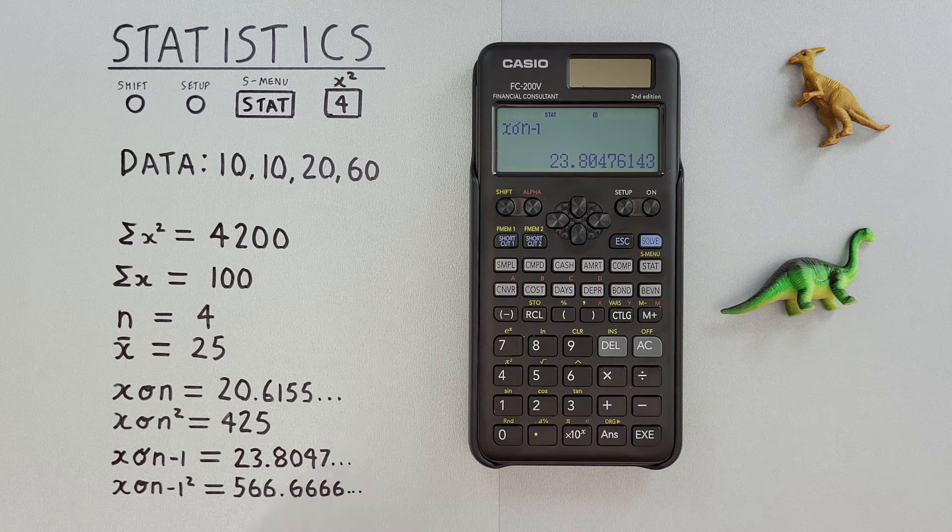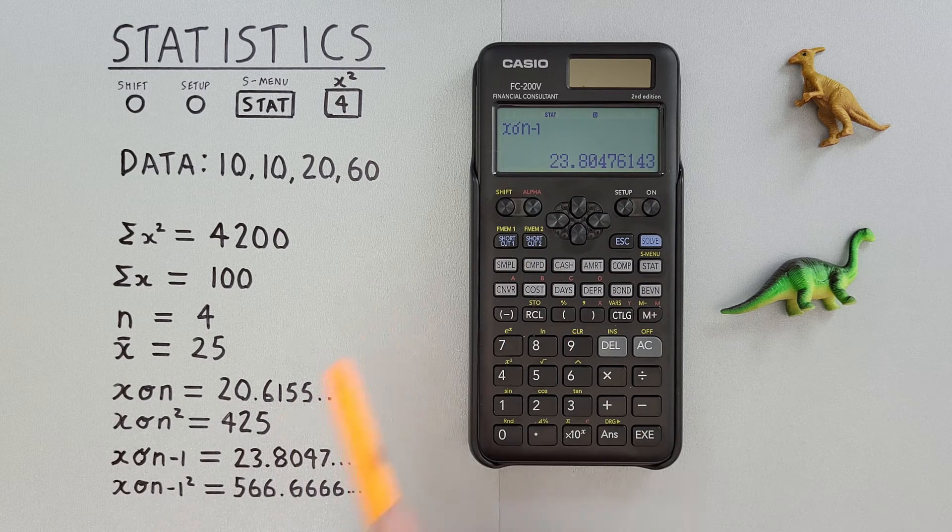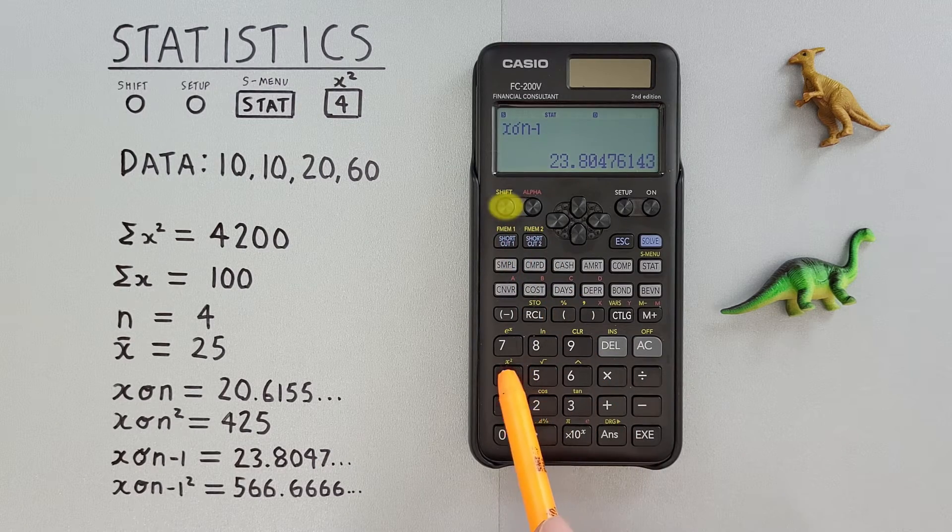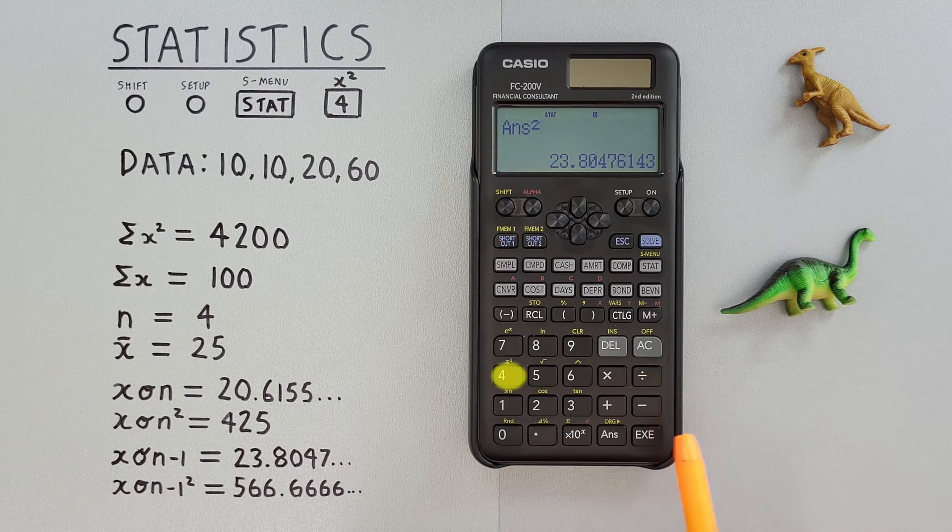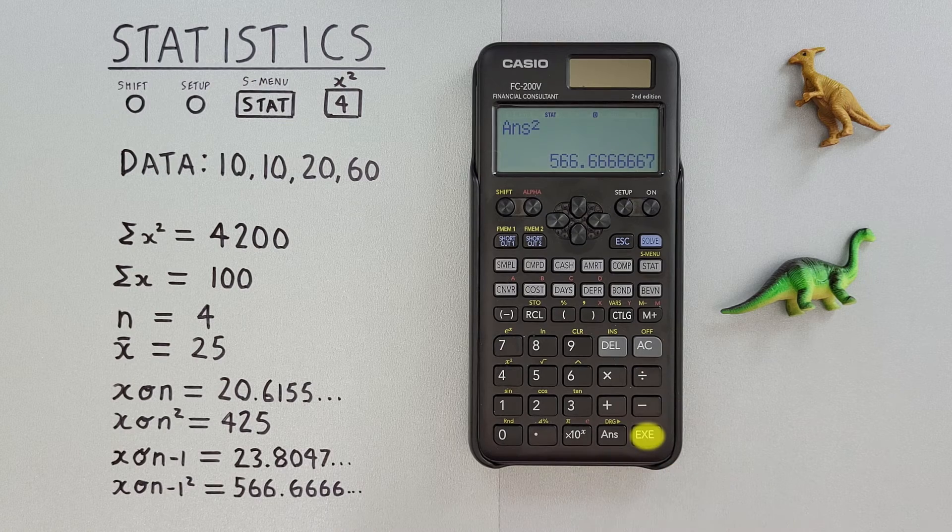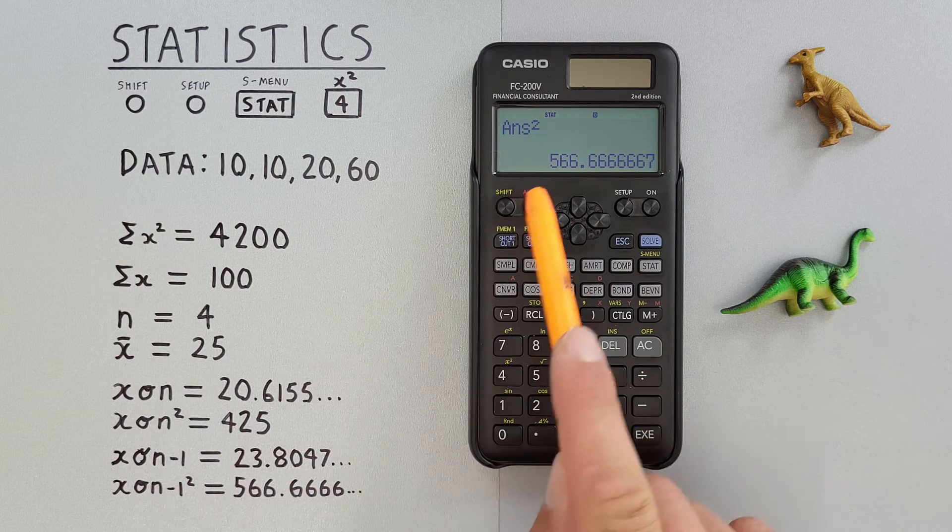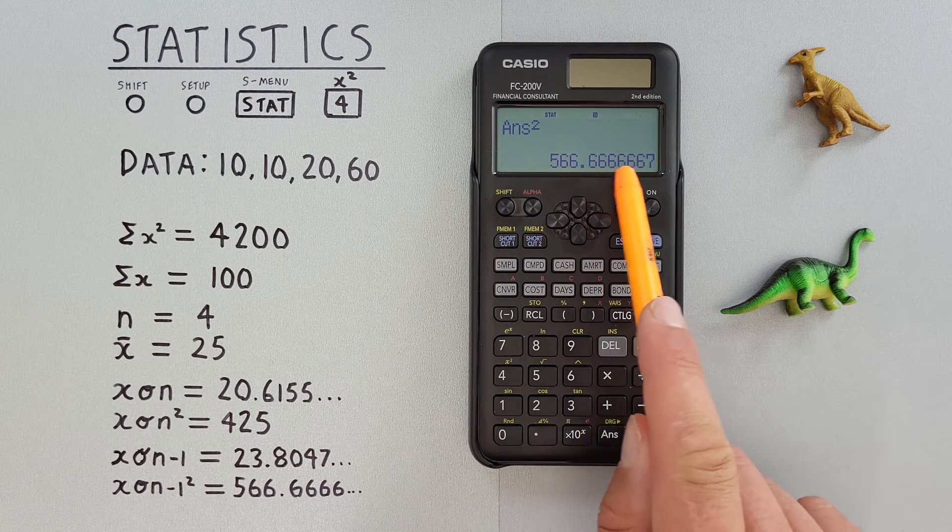And again, if we want to get our sample variance, all we have to do is press shift 4 to square that. Hit EXE, hit EXE, and we get a sample variance σn-1² = 566.66.